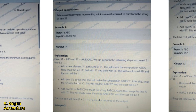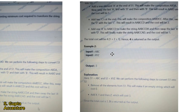Then add one A to AABCCD to make the string AABCCDA, and swap the last A with D, resulting in AABCCAD. The cost for this step is 1 because we are adding another A. So now S1 becomes S2. Total cost: 1 (adding A) + 2 (adding two C's) + 1 (adding another A) = 4. Hence 4 is the output. Another example is ABC and XYZ — the output is 3.